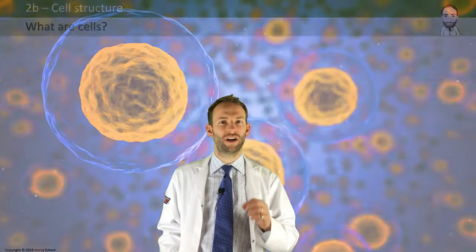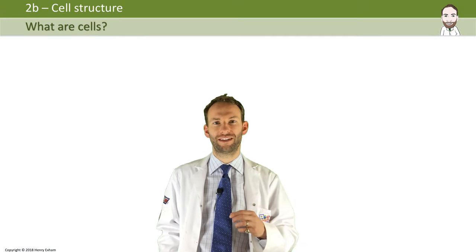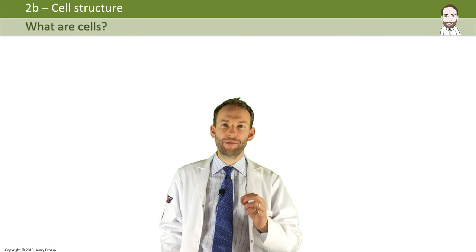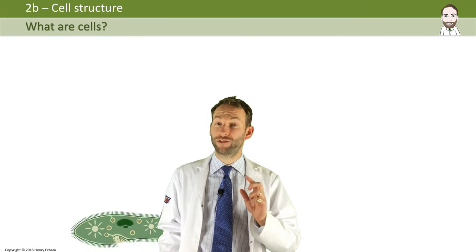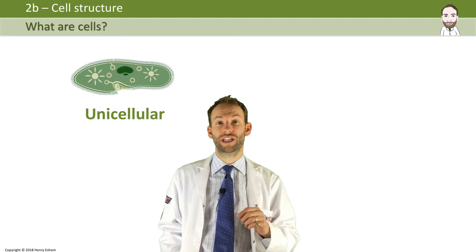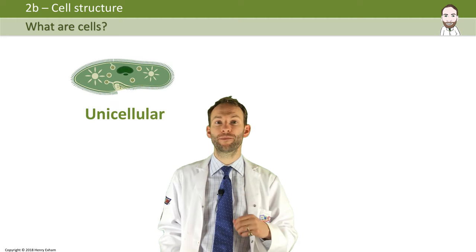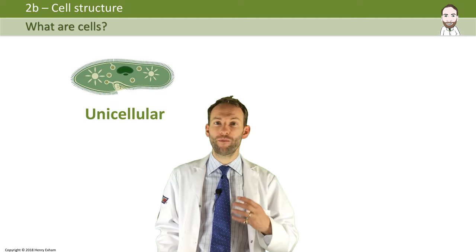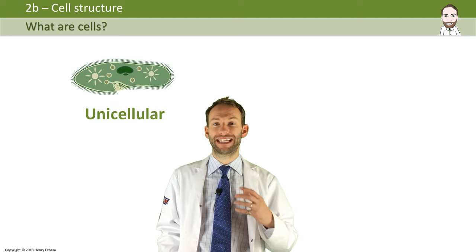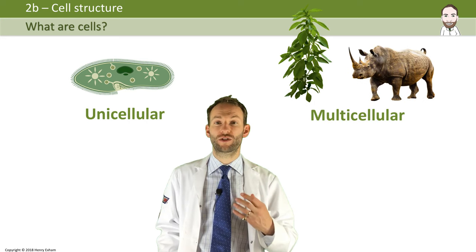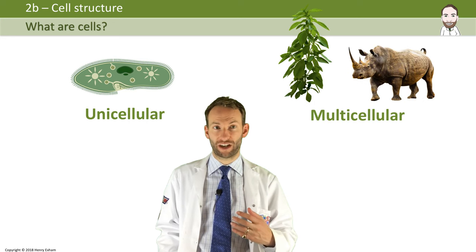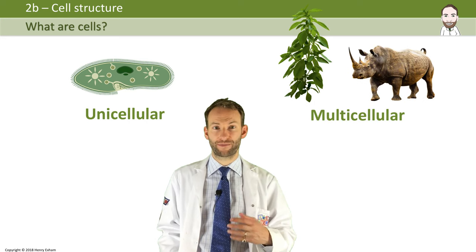So what are cells? All living organisms are composed of cells. The simplest organisms are made of just one single cell — we call them unicellular organisms. But more complex organisms, like many animals and plants, are made of lots of cells, and these are called multicellular organisms.